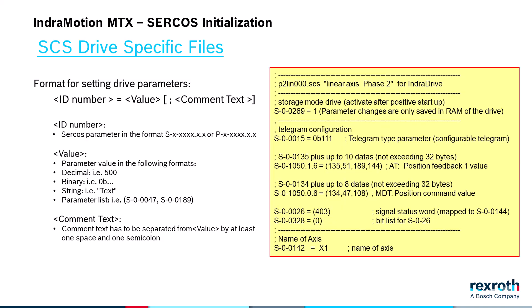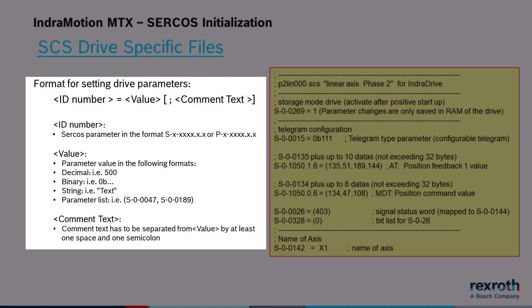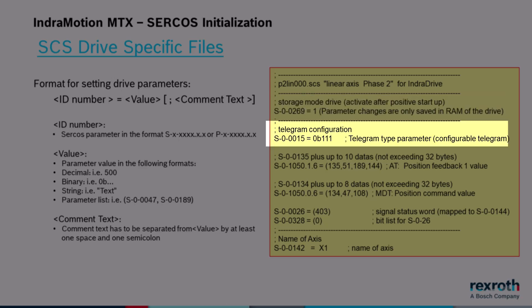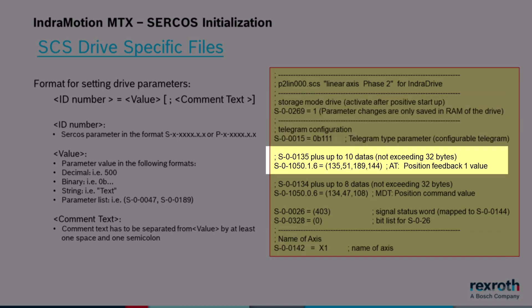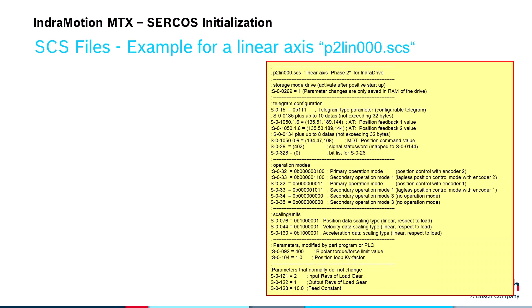Drive-specific SCS files contain two types of lines: lines for comments, and lines for assigning values to CIRCOS parameters. Just like configuration files, comment lines always begin with a semicolon. The lines for drive parameters always begin with the CIRCOS parameter or ID number. You can assign different values to the parameter: a decimal value, a binary value, a string value, or a parameter list. Comments can be added to the end of a line, separated from the value by at least one space and a semicolon. This example SCS file for a linear axis writes to all the drive parameters with the exception of the CIRCOS communication/time and parameters that the control automatically generates from the machine parameters.